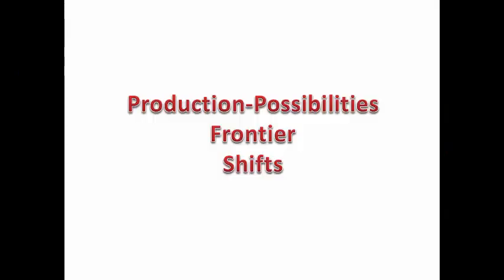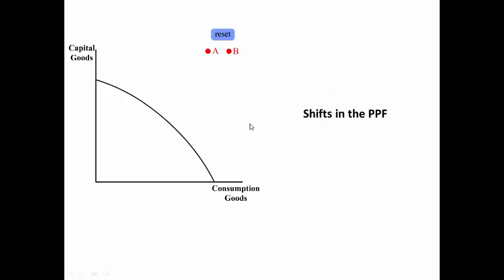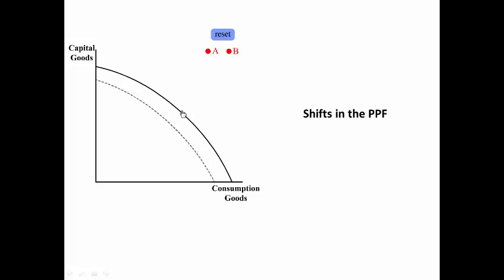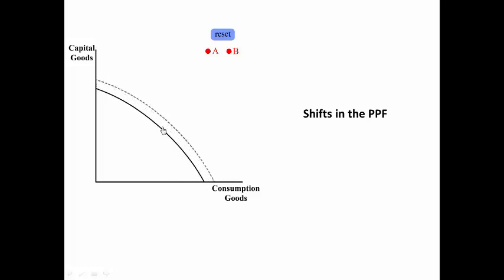Production Possibilities Frontier Shifts. There are six possible shifts in the production possibilities frontier. The frontier could shift outward, which is good, or the frontier could shift inward, which is bad.